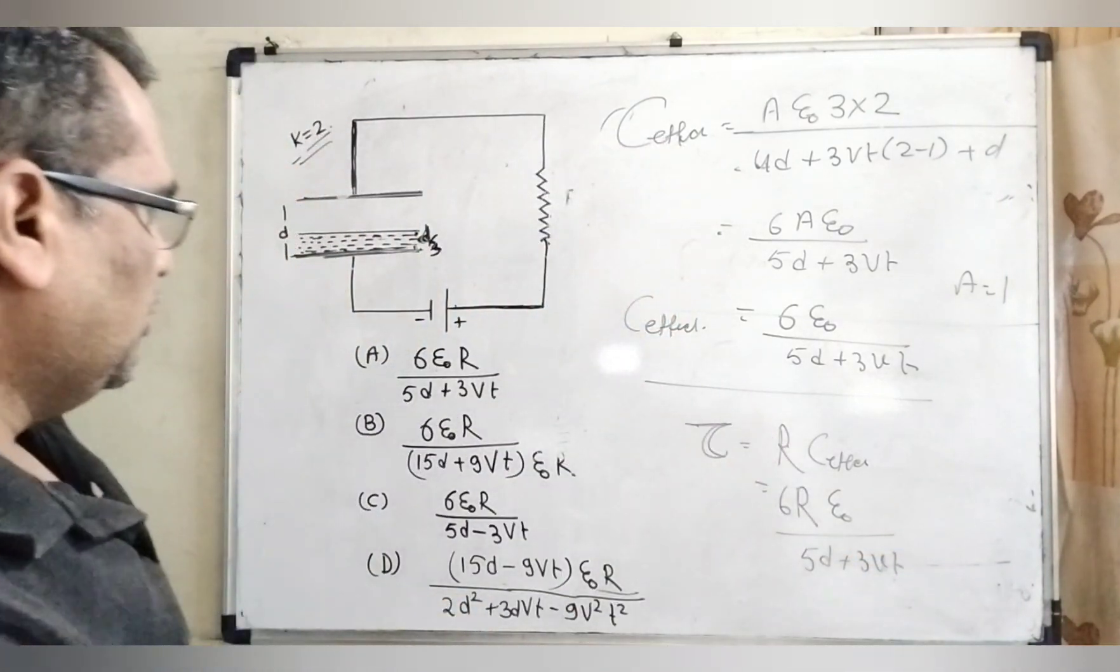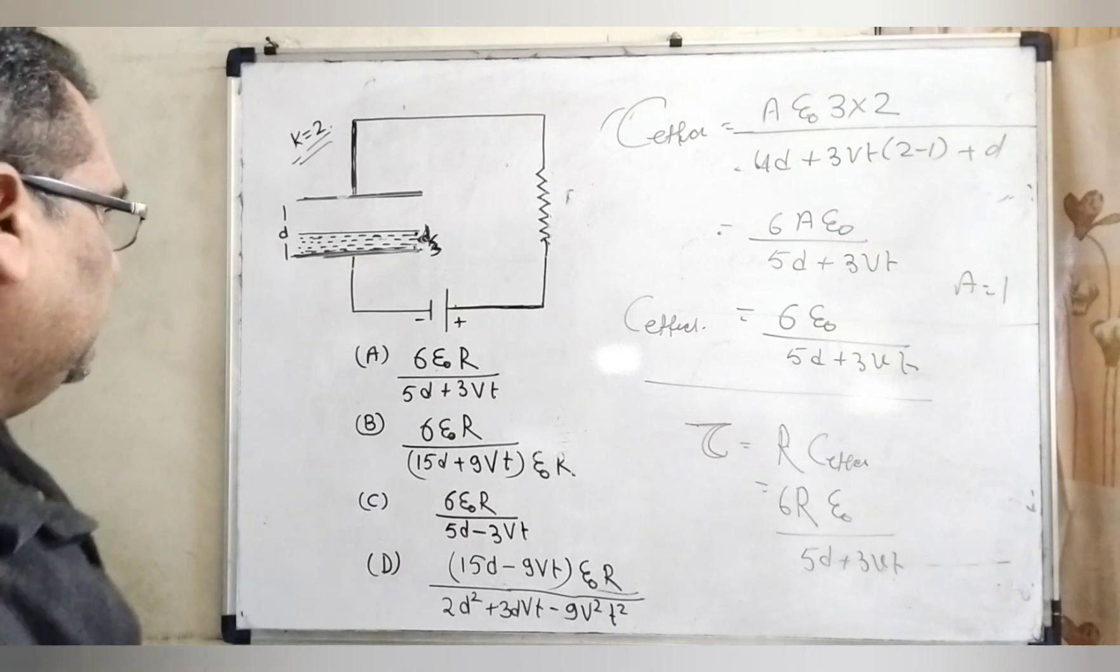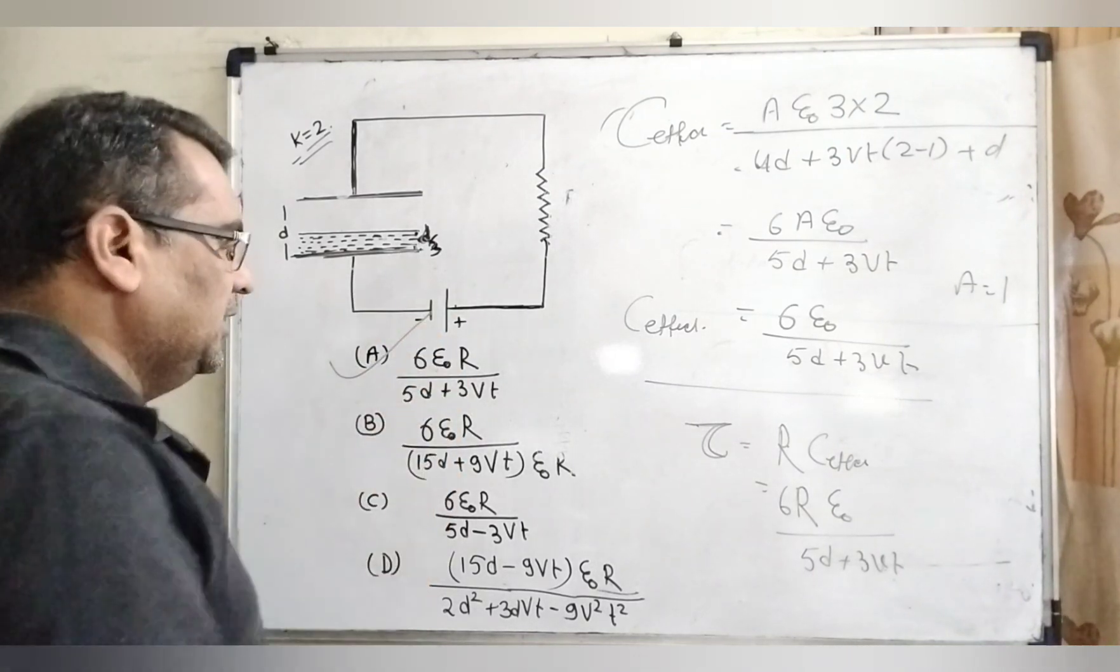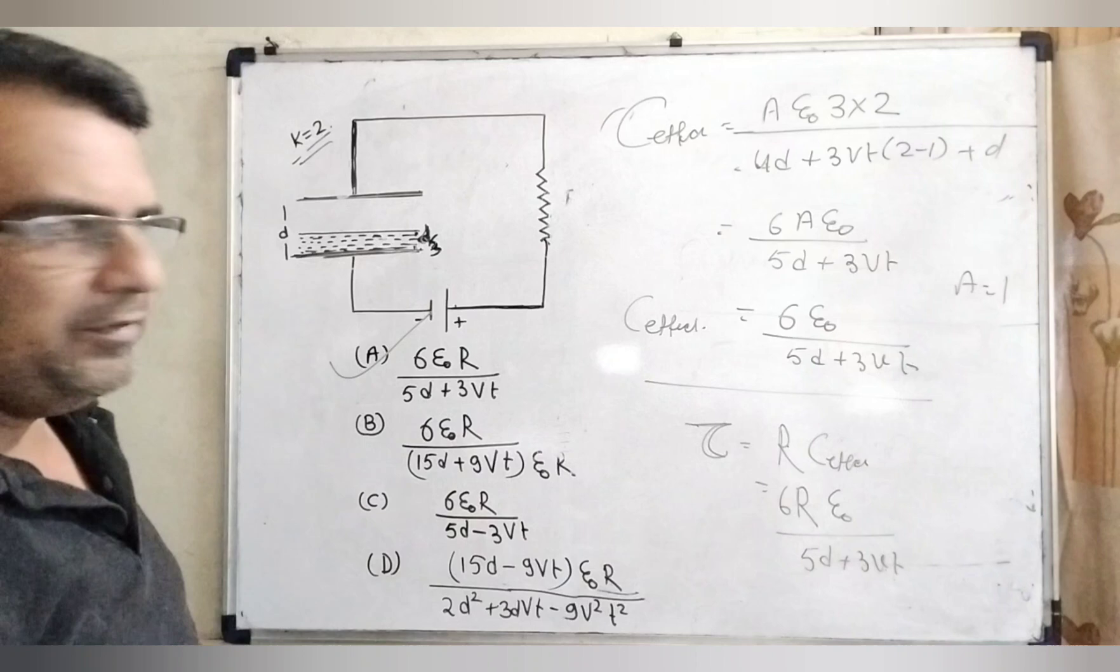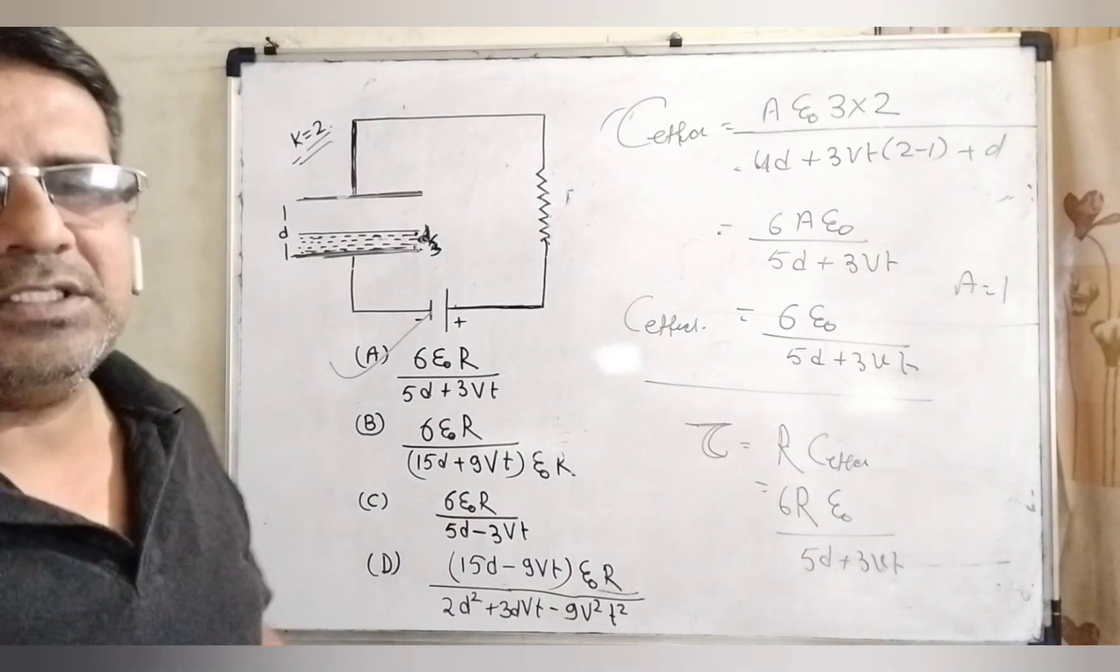Now, check which option is correct. Now, you can see that A option is correct: 6R epsilon 0 over 5d plus 3Vt. I hope so, you understand this question.